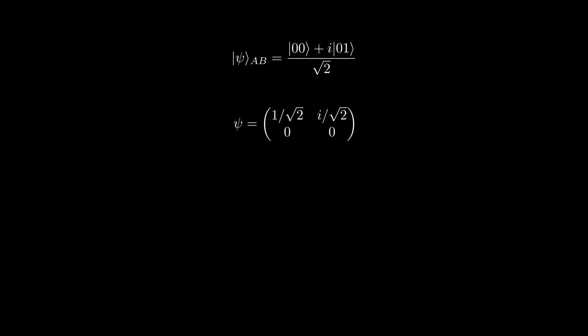Here, we have that the psi matrix is given as follows. To compute the SVD, we first compute the singular values. This is simply done by computing the eigenvalues of psi psi dagger and square rooting them. In this case, we have that the singular values are 1 and 0. Consequently, the Schmidt rank is 1, meaning that we have a product state, as we expect.